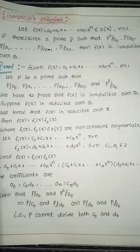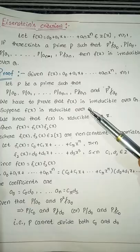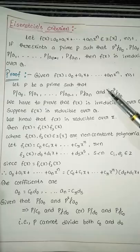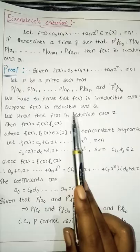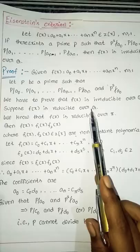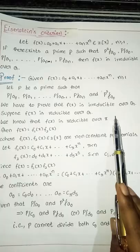The proof of the criterion: given f(x) = a0 + a1·x + ... + an·x^n with n ≥ 1, let p be a prime such that p divides a0, p divides a1, ..., p divides a(n-1), p does not divide an, and p squared does not divide a0. We have to prove that f(x) is irreducible over Q.